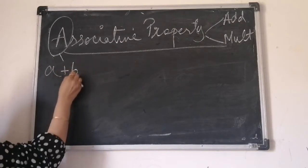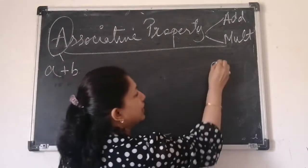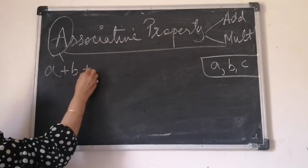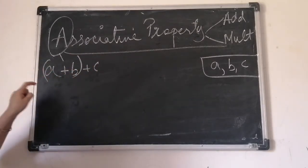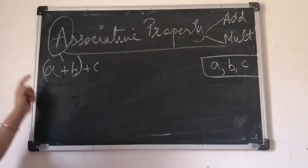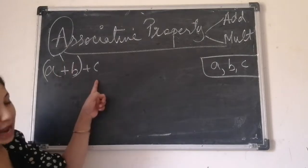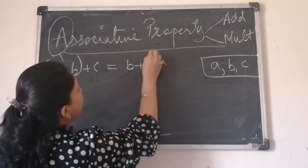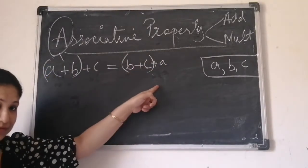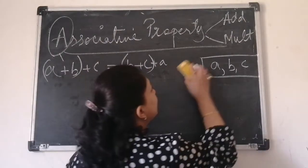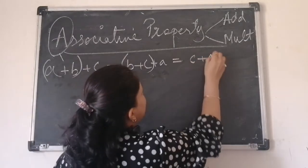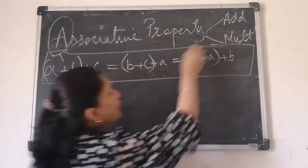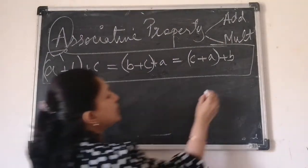Let the three integers be A, B, and C. For associative property of addition: (A + B) + C means take the first two numbers, then add the third. Or (B + C) + A means take the second and third number first, then add the first. Or (C + A) + B. This is the associative property for addition. Let us take one example.